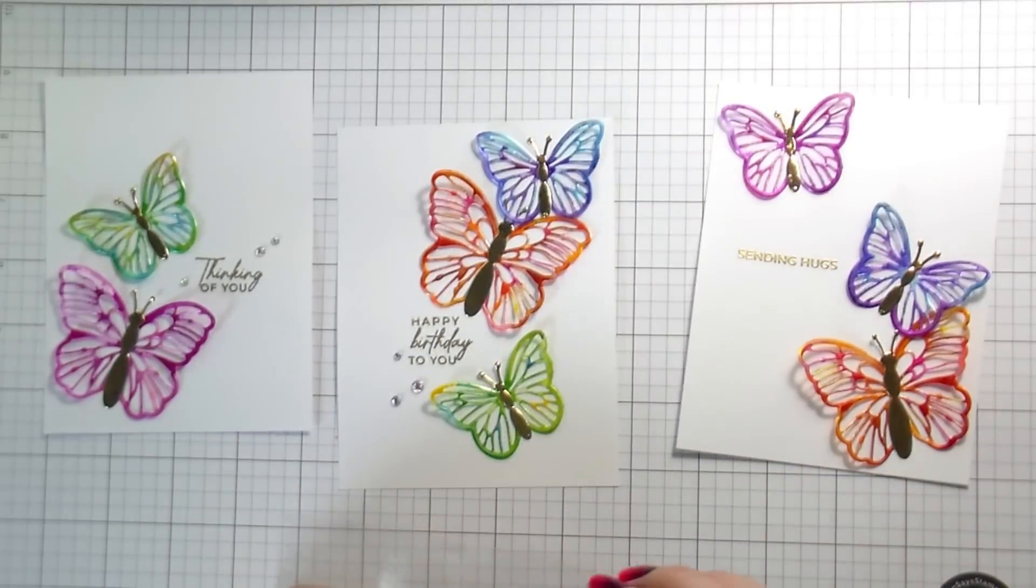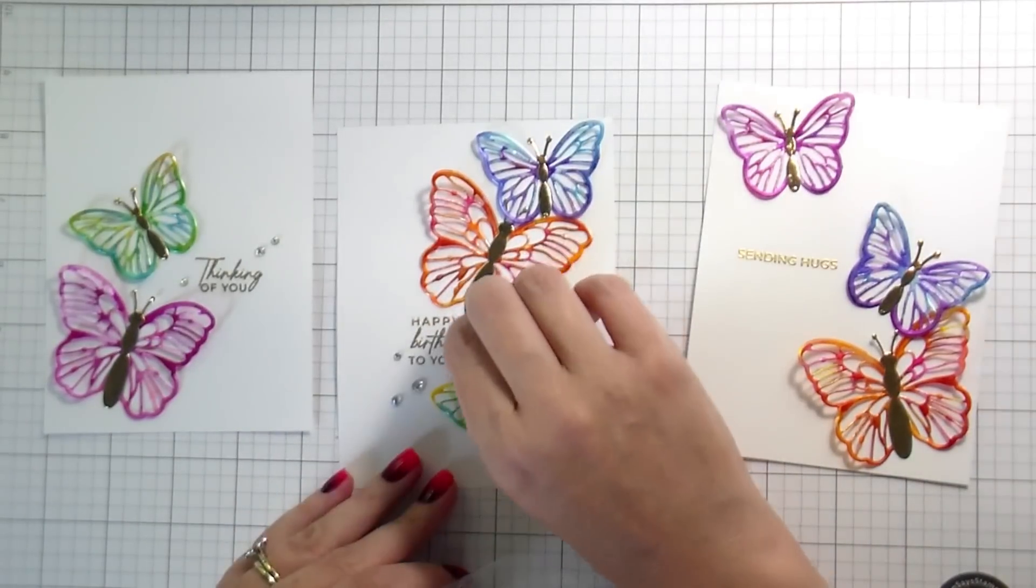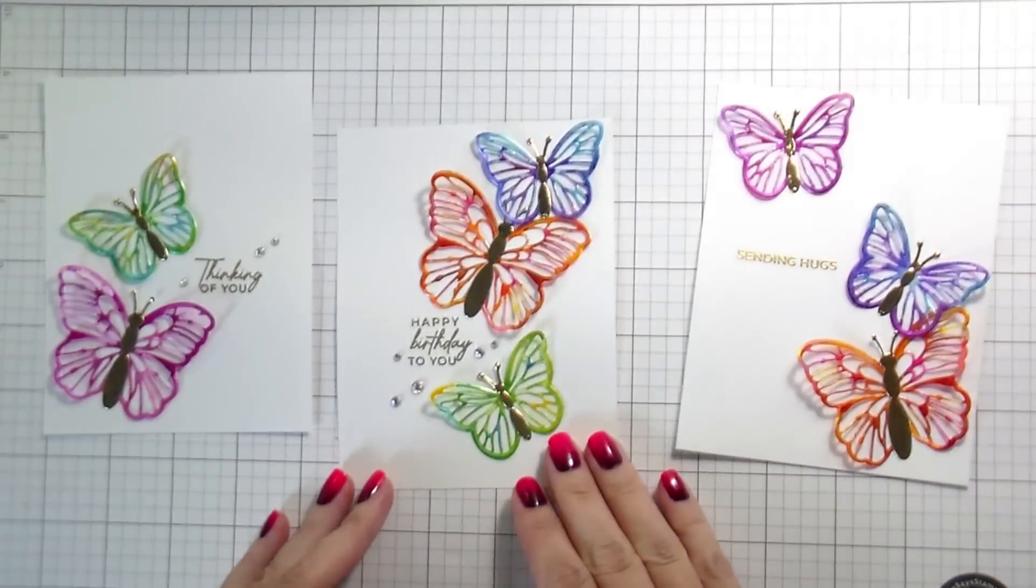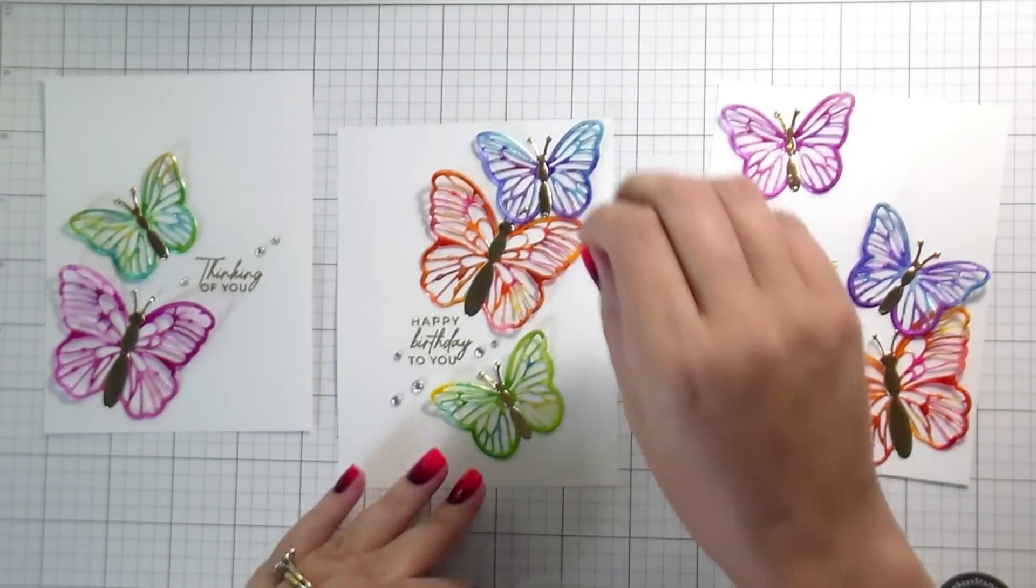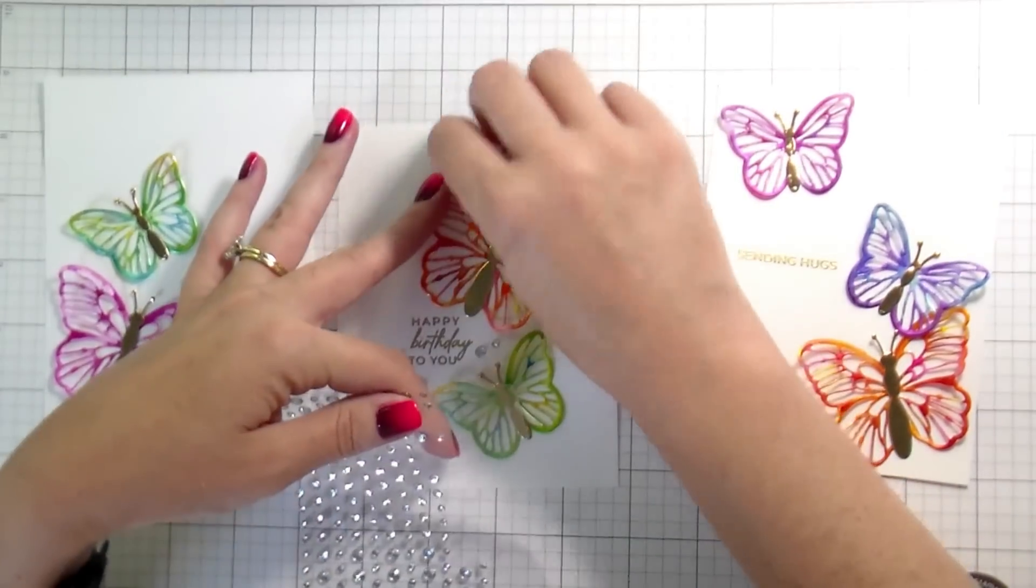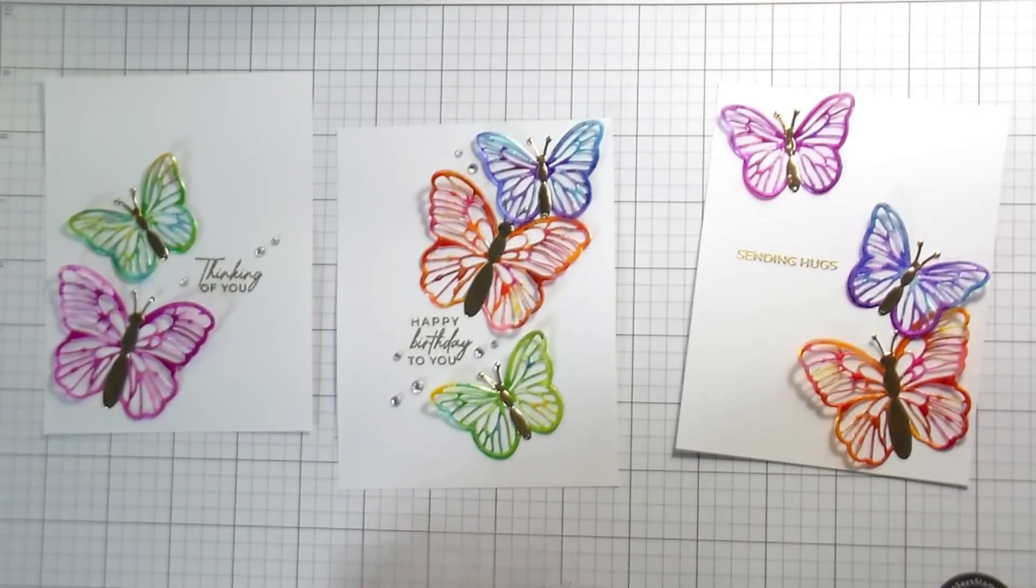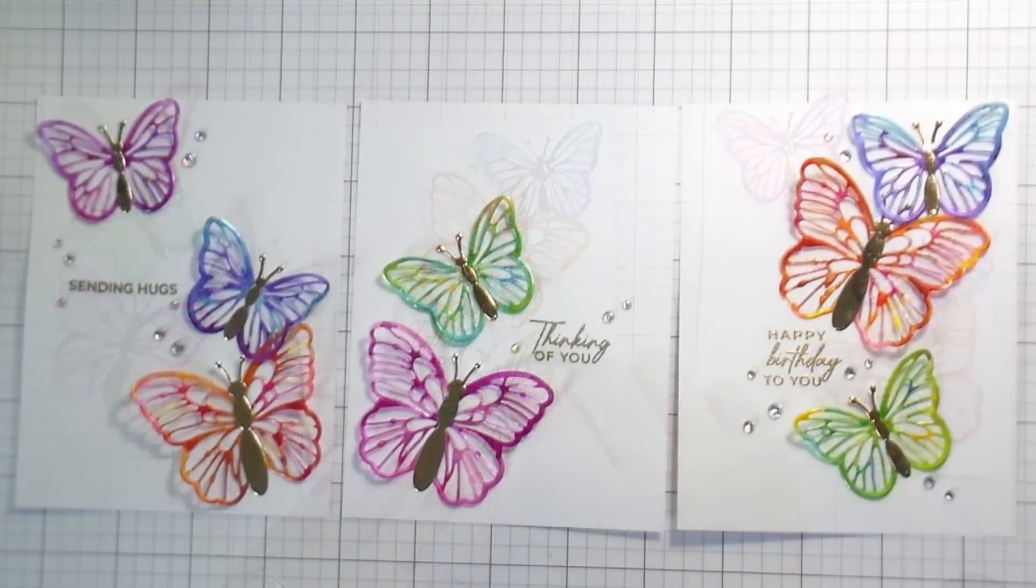And I have done alcohol inks with regular alcohol, like not the, I think mine's 71% isopropyl alcohol and Copic re-inkers. So if you have those or any other alcohol re-inker that would work as well. The colors just maybe not as bold.